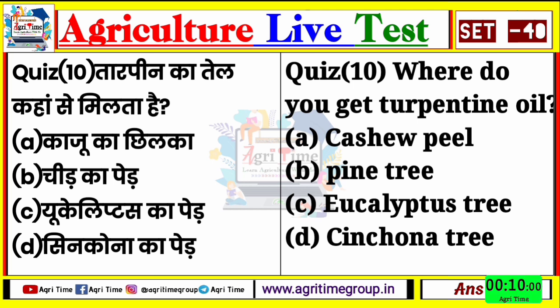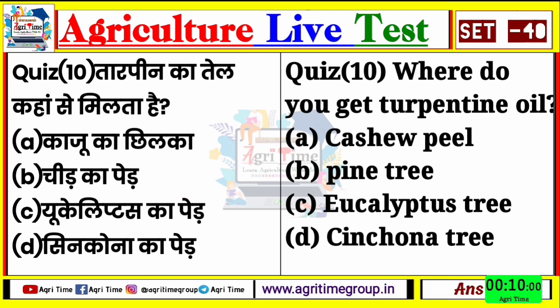Quiz number 10 - terpene का तेल कहाँ से मिलता है? Generally जो terpene किसमें use किया जाता है - color paint जो होता है, उसमें use किया जाता है, आपके घरों में भी use किया जाता है। जब भी आप paint करते हो घर में, तो इसकी जो उत्पत्ति है, यह कहाँ से प्राप्त होता है - इसका right answer होगा option number B, चीड़ के पेड़ से। Pine tree जो होता है - चीड़ के पेड़ से terpene का तेल प्राप्त होता है।